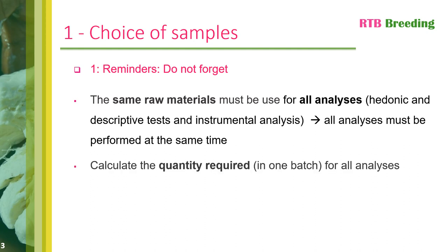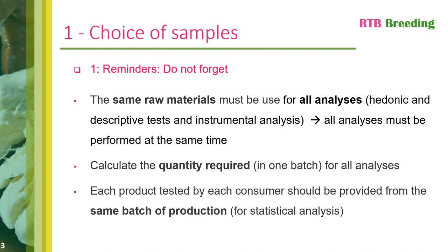Before starting your various analyses, it's important to calculate precisely how much raw material will be needed to perform all the analyses. If you don't have much raw material, you may have to adapt your analyses accordingly. Finally, when you carry out consumer tests and QDA analyses, it's important that all the samples tested come from the same production batch. For example, if you are analysing a processed and cooked food such as ATK, your consumer tests and QDA analyses must be based on the same ATK processed in the same place and at the same time.